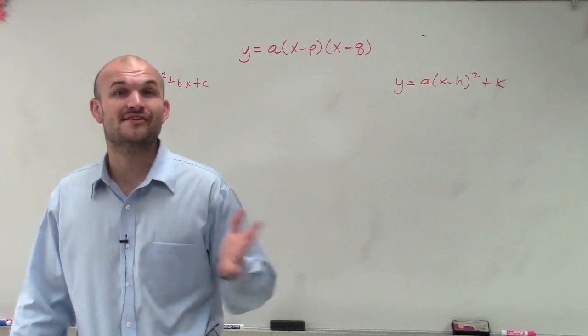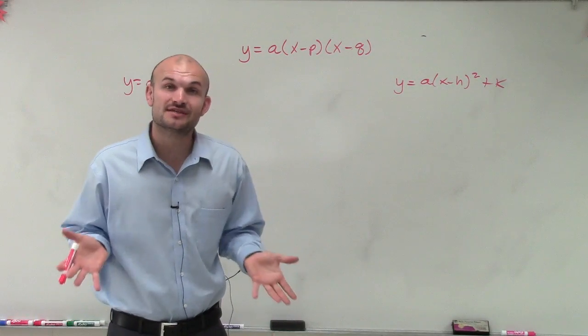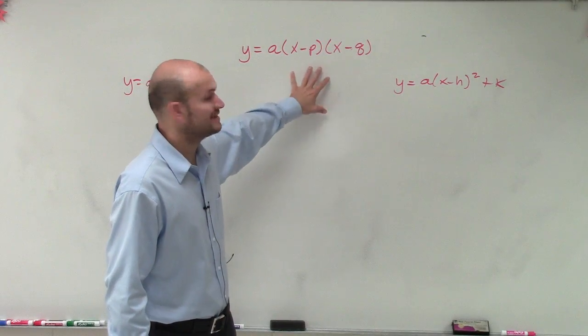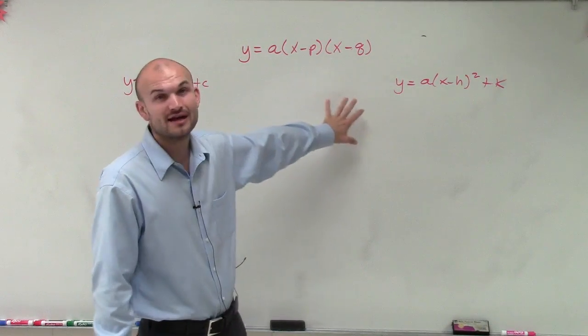Now, intercept form is very popular when we want to find the x-intercepts or the zeros of the function for a quadratic. And that's why we use this one, because it's already factored down.